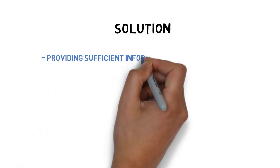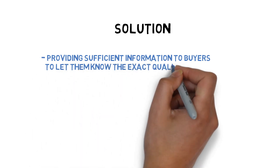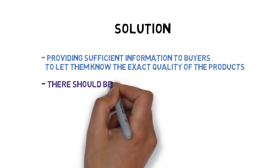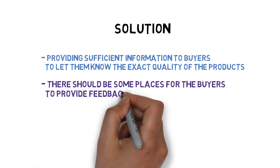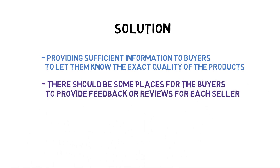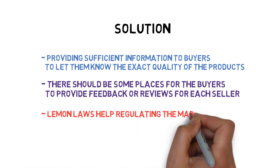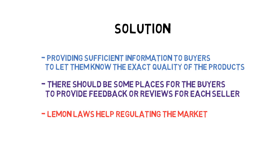The solution for the lemon problem is providing sufficient information to buyers to let them know the exact quality of products. In addition, there should be places for buyers to provide feedback or reviews for each seller. Also, some emerging technologies such as big data can help buyers get better knowledge about the product. Nowadays, many countries have corresponding lemon laws which help regulate the market, ensuring buyers get what they paid for quality-wise.